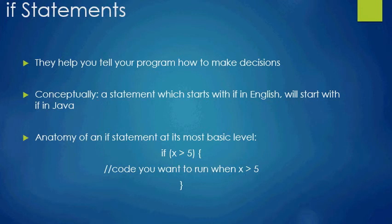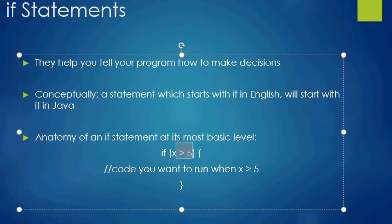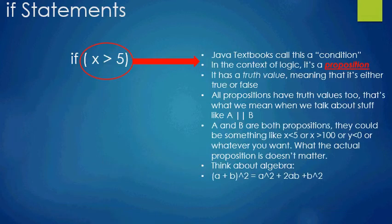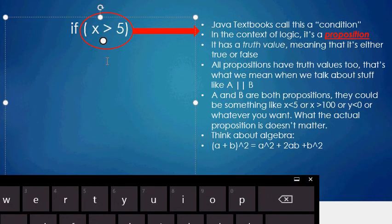That takes me to my next point — the anatomy of an if statement at its most basic level is: 'if,' then you open a parenthesis, then you have a logical test. Then we close the parenthesis, then we open a brace, and then we have a bunch of lines of code that we want to execute if it is indeed the case that this condition is true. In this case our condition is x greater than five, so between the braces is code that we want to execute whenever x is greater than five.